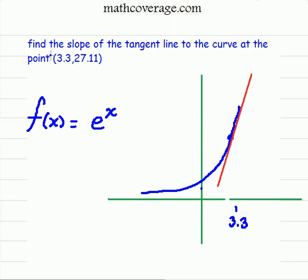In this problem here, we're asked to find the slope of the tangent line to the curve at the point (3.3, 27.11).